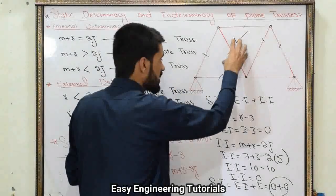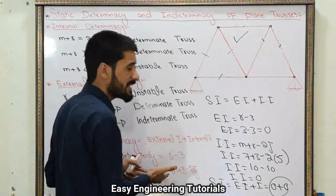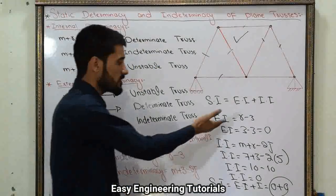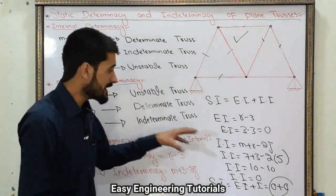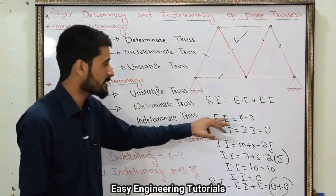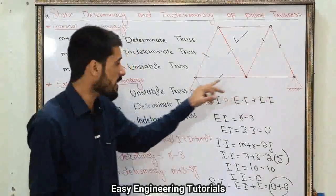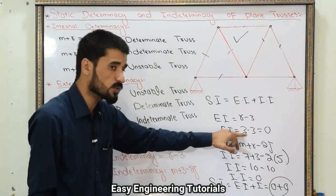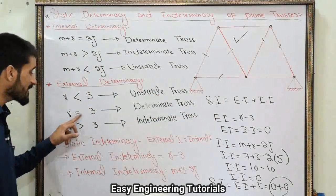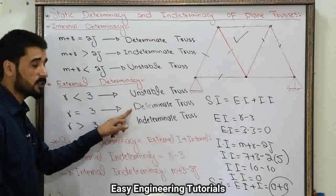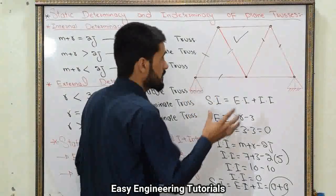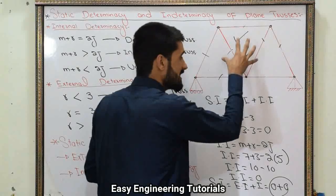Let's suppose a truss. Static indeterminacy equals external indeterminacy plus internal indeterminacy. External indeterminacy equals R minus 3. Here the number of R is 3, so 3 minus 3 equals 0. Since R equals 3, this truss is externally determinate.